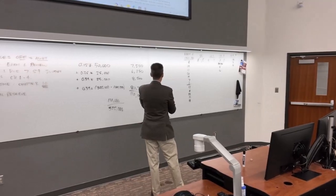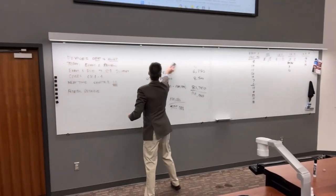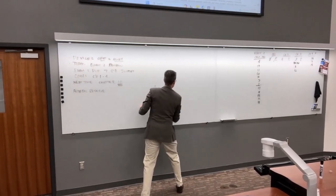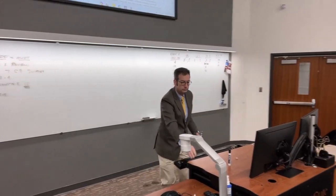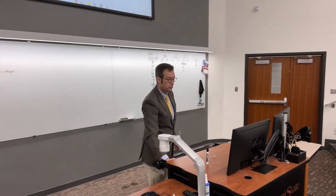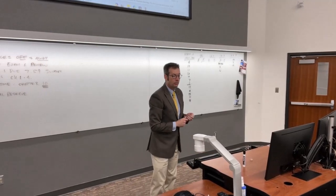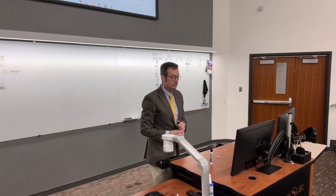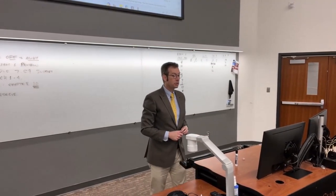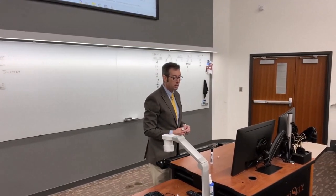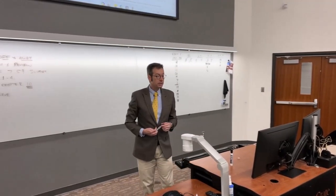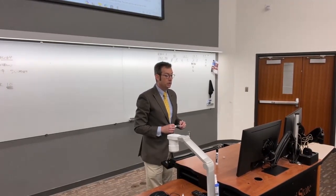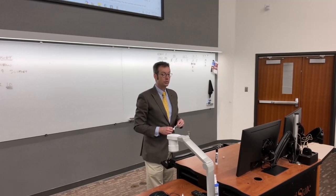Now we are on to question four. Barney's Franks has net cash flow from operating activities for the last year of $21 million. The income statement shows net income is $25 million and depreciation is $7 million. During the year, the change in inventory on the balance sheet was an increase of $6 million.